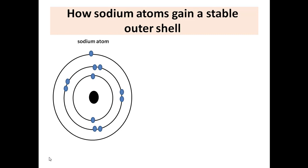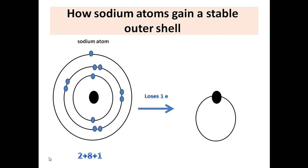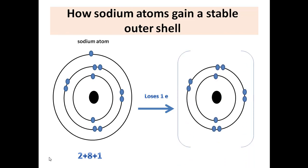This atom is not stable and it needs to do something to become stable. It's not logical to gain seven electrons to fill the outer shell, so the easiest way is losing the one electron from the outer shell. After losing this electron, the atom has two electrons in the first shell and eight electrons in the second shell, which is filled.